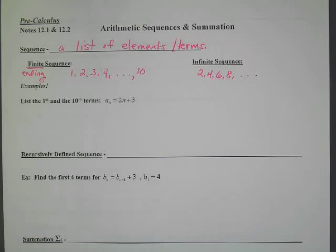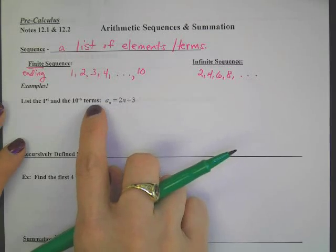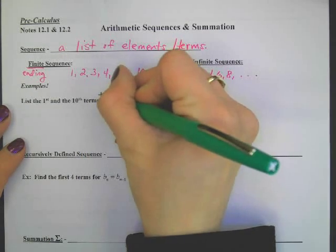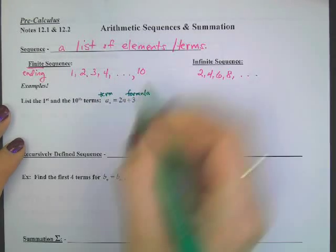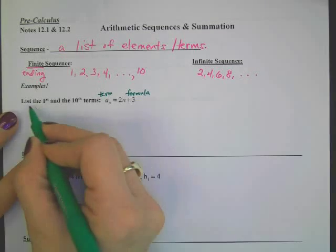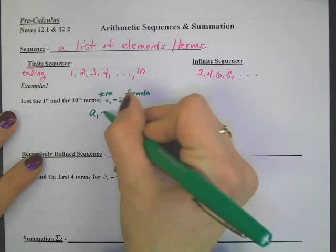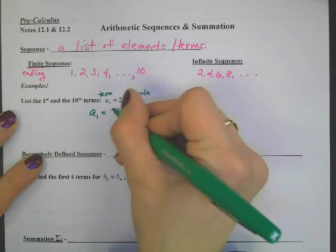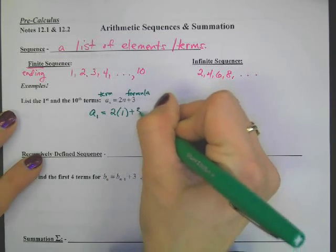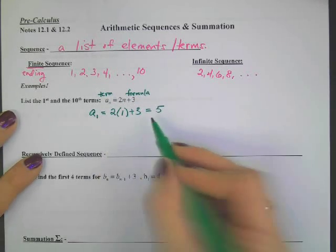Let's take a look at some notation. This is by far going to be the trickiest part about sequences and series — getting used to the notation. Every time you have a term, a term is going to be called a sub n. Here's the term, and then here's the formula. You have to plug in n to make the terms. For example, find the first term — that would be a sub 1, so let n equal 1. That means 2 times 1 plus 3, so a sub 1 equals 5. The first term is 5.